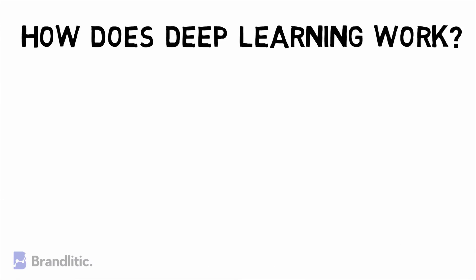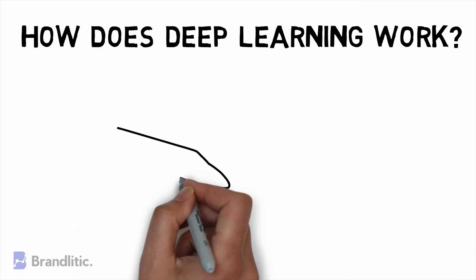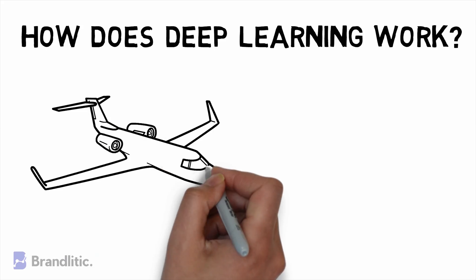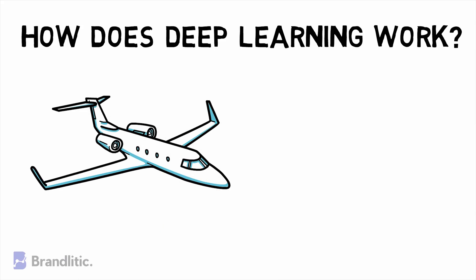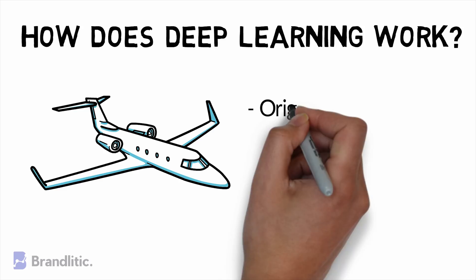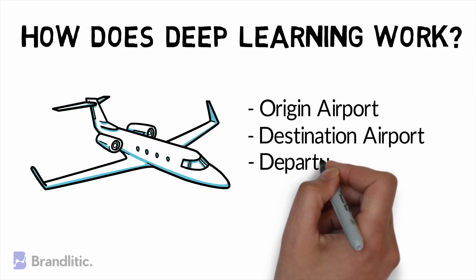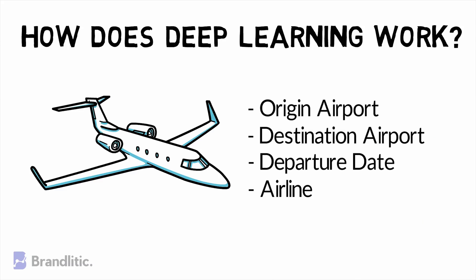So how does deep learning work? Let's try to understand how deep learning works by building a hypothetical airplane ticket price estimation tool. We will train it by using a supervised learning method, and our price estimator will predict the price using the following inputs: Origin Airport, Destination Airport, Departure Date, and Airline.